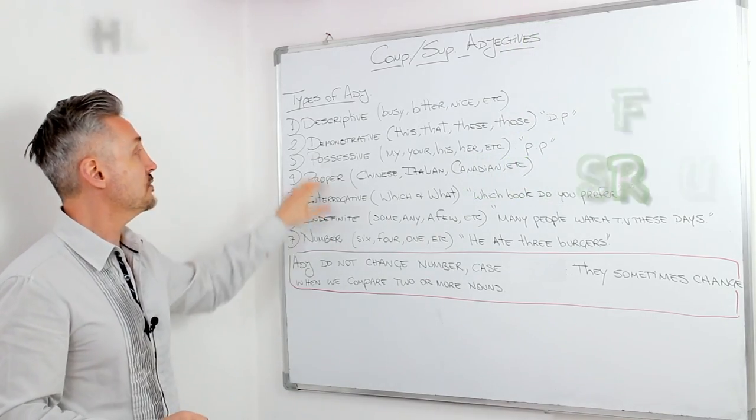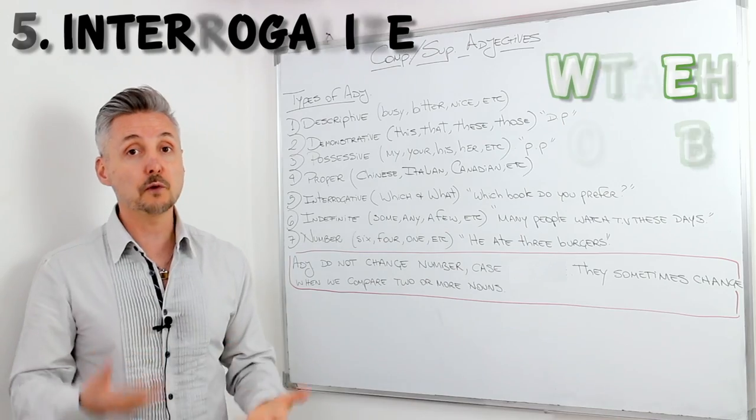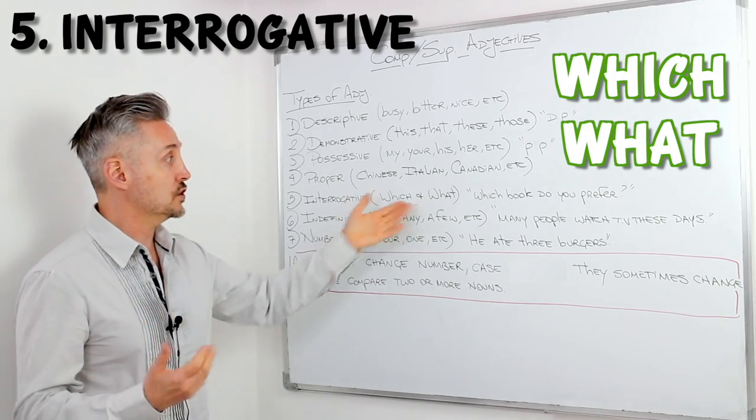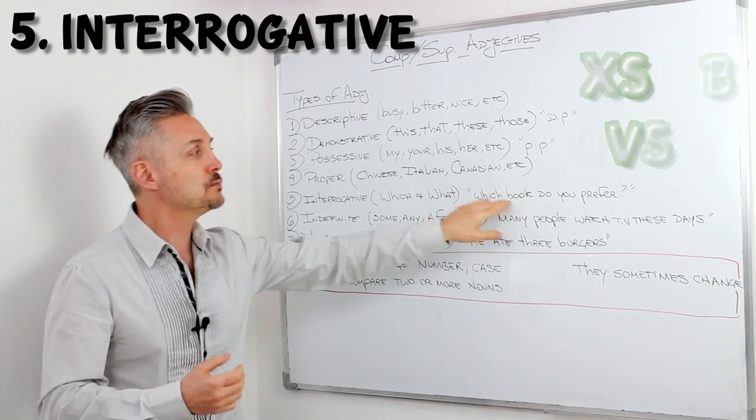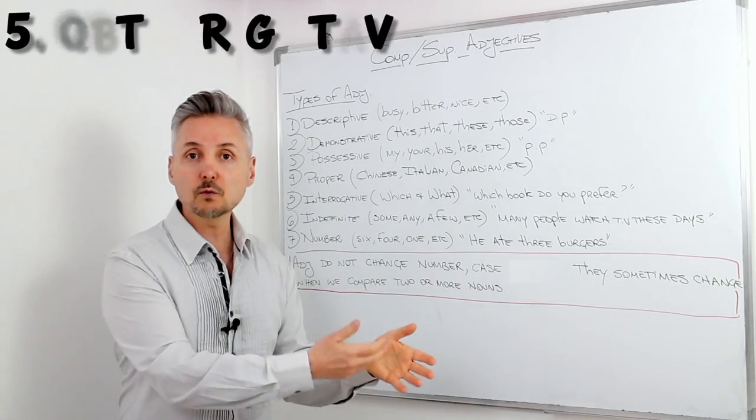Then we have interrogative adjectives, like which and what. So, for example, when we ask a question, which book do you prefer? This one or that one?